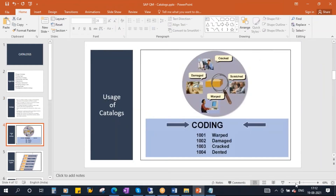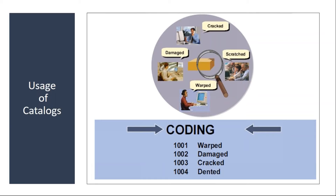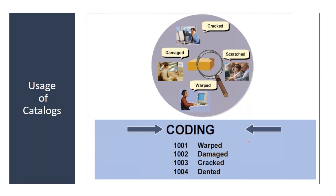For example, suppose you are receiving a box from a supplier and you want to describe the condition of the box — whether it is cracked, damaged, scratched, or warped. You give this predefined information to the user with an alphanumeric code and descriptive text. The user selects from this list. These individual entries are called codes, and they are clubbed into a code group — you can call it 'condition.'